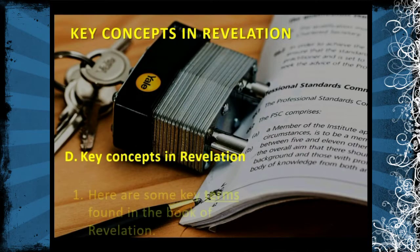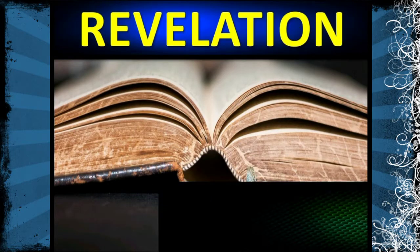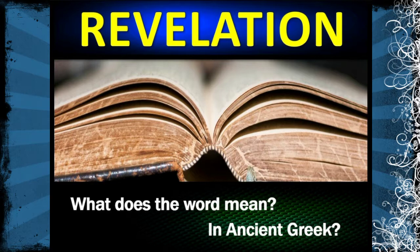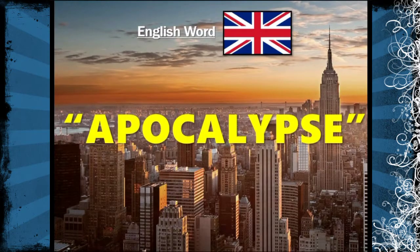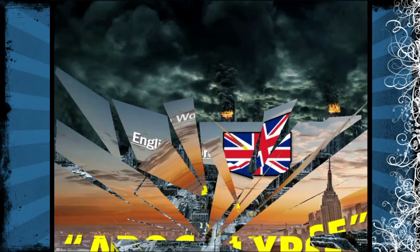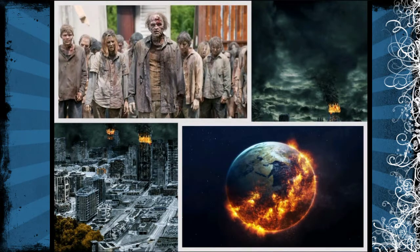Let's look at some key terms found in the book of Revelation. The best term to start with is: what does the title Revelation mean? In ancient Greek, the word for Revelation was the word apocalypsis. That might sound familiar — it's a sci-fi term we use, usually talking about something like a zombie apocalypse or the end of the world.